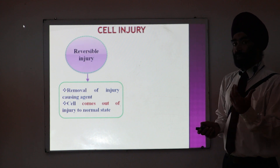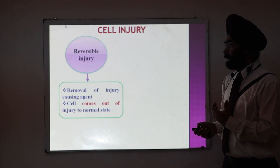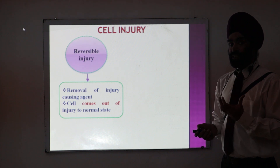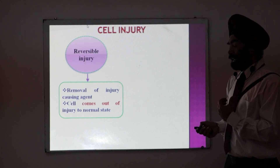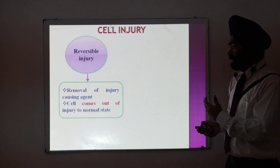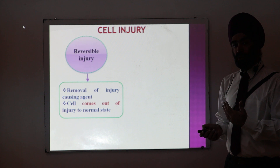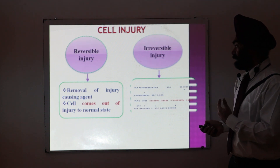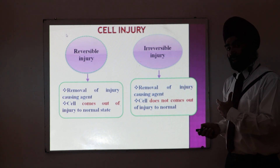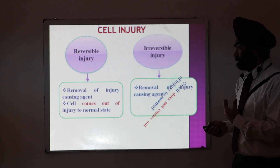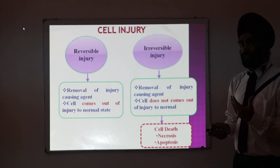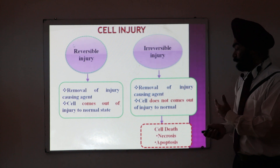Before that, I want to explain what reversible cell injury means. A reversible cell injury means that if we remove the cell injury causing agent, the cell reverses back to its original normal state. But in an irreversible injury, even if we remove the injury causing agent, the cell does not come out of that injury.